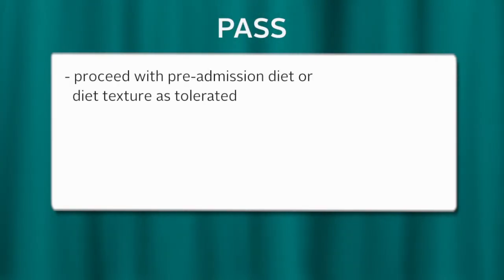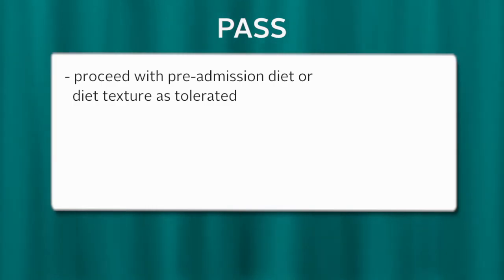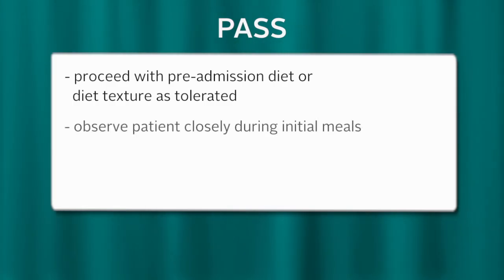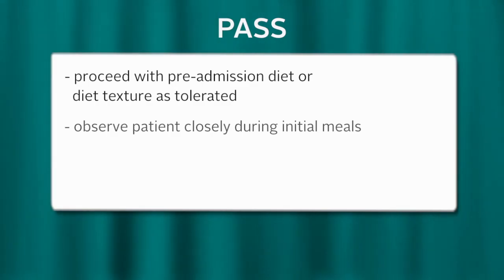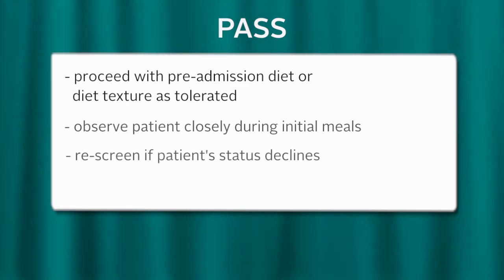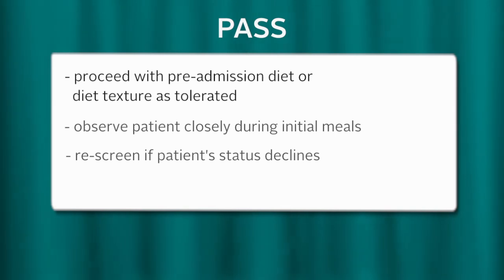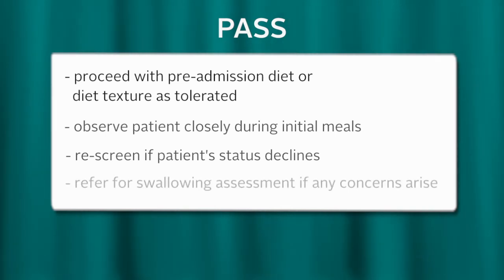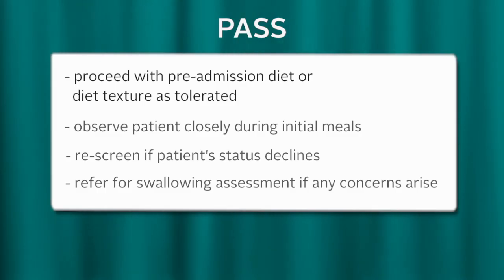If the patient passes the swallowing screen, provide them with their pre-admission diet or diet texture as tolerated. Observe your patient closely during their initial meals to make sure they're tolerating the oral diet. You can re-screen them if the patient's status declines, and you can refer them for a swallowing assessment at any point if concerns regarding dysphagia arise once they're eating.